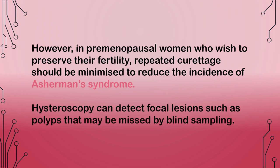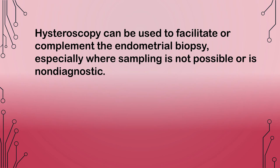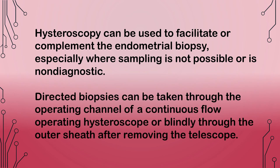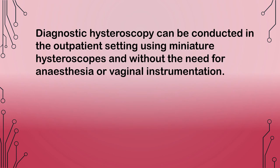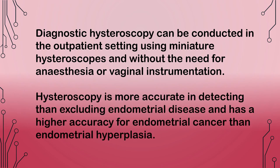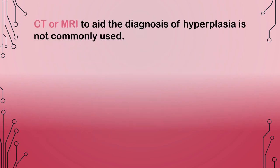Hysteroscopy can detect focal lesions such as polyps that may be missed by blind sampling, and can be used to facilitate or complement the endometrial biopsy, especially where sampling is not possible or is non-diagnostic. Directed biopsies can be taken through the operating channel of a continuous flow operating hysteroscope or blindly through the outer sheet after removing the telescope. Diagnostic hysteroscopy can be conducted in the outpatient setting using miniature hysteroscopes without the need for anesthesia. Hysteroscopy is more accurate in detecting than excluding endometrial disease and has higher accuracy for endometrial cancer than endometrial hyperplasia.